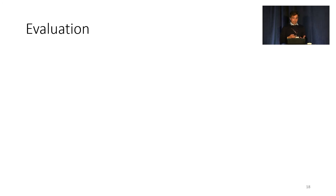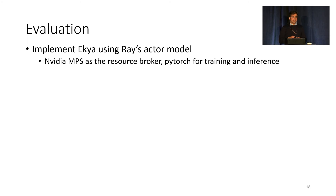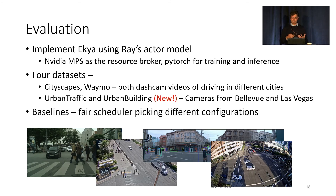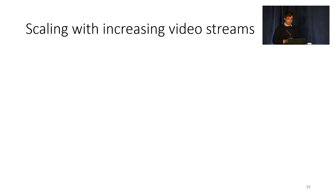We implement IKEA using Ray's actor model and use NVIDIA's MPS as the resource broker to do fine-grained resource allocation. We evaluate IKEA on two public datasets and two new datasets that we release as part of this paper. We compare IKEA against multiple baselines, each of which retrains but uses a fair scheduler to equally allocate resources to all video streams, with varying choices of configurations.